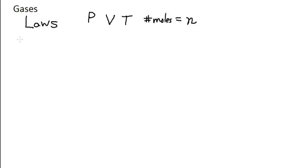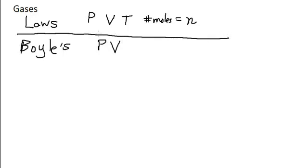Scientists have been studying gases for hundreds of years, and we're going to go through the basic laws that describe gas behavior with respect to these variables. The first law we're going to look at is called Boyle's Law. Boyle was studying pressure-volume relationships of gases — looking at how pressure changed when he changed the volume, or vice versa. As he studied pressure and volume, he kept temperature and number of moles constant, so he was only looking at the relationship between pressure and volume.